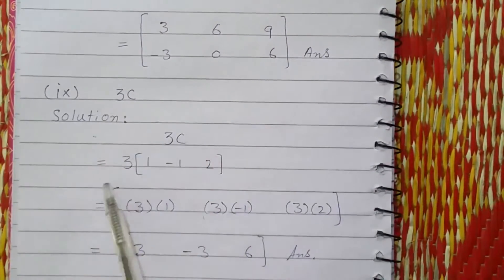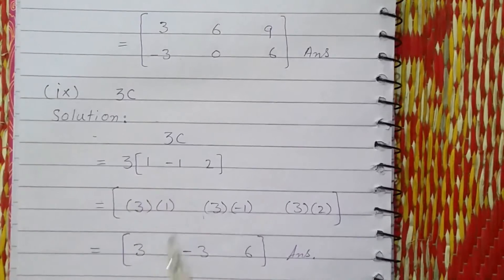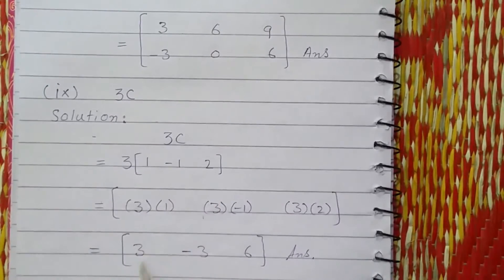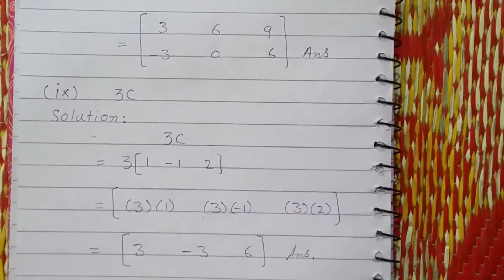For 3C, 3 is multiplied with matrix C: 3 ones are 3, 3 minus 1s are minus 3, and 3 twos are 6.